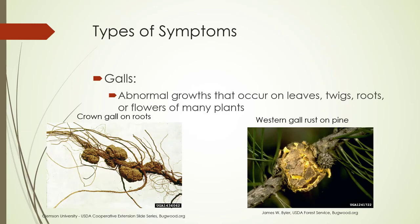Galls are abnormal growths that occur on leaves, twigs, roots, and flowers of many plants. Here's crown gall on roots — sometimes you'll see crown gall at the base of the stem at the soil line. That is a bacterial disease. Western gall rust is a fungal disease.